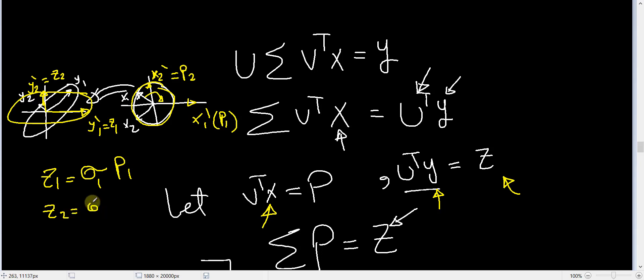And Z₂ is equal to some other scaling factor multiplied by P₂. So that's what the SVD does in the diagonalization picture.